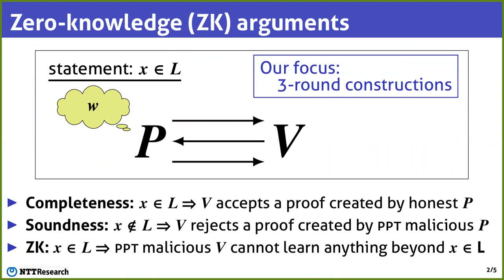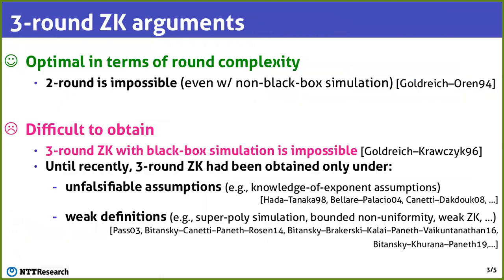We consider a construction where, as shown in this picture, the prover and the verifier exchange only 3 messages. 3-round constructions are interesting for zero-knowledge argument because they are optimal in terms of round complexity, due to the classical impossibility of 2-round zero-knowledge.